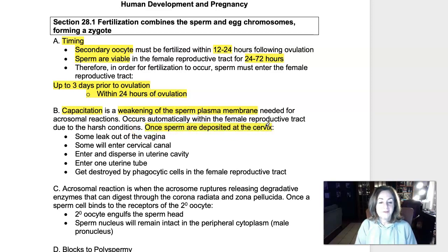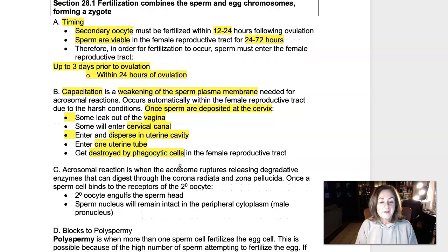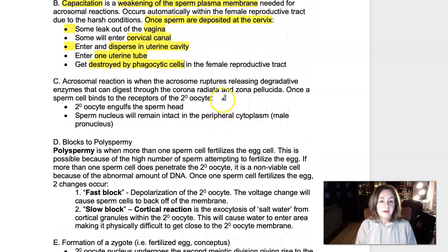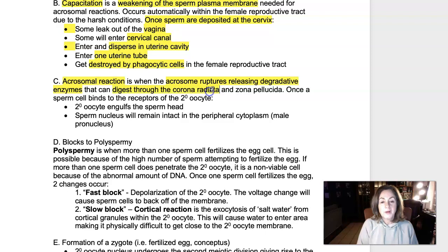Once sperm are deposited at the cervix, some will backflow out of the vagina; some will enter the cervical canal, disperse into the uterine cavity, and go into the uterine tubes — both uterine tubes. All the time, sperm are being destroyed and attacked by the female's immune system as foreign cells. But once a sperm cell reaches the secondary oocyte, the acrosomal reaction occurs: contact of the sperm cell with the zona pellucida causes the acrosome to rupture and release degradative enzymes that digest through the corona radiata and zona pellucida, which are the protective coatings on the oocyte.